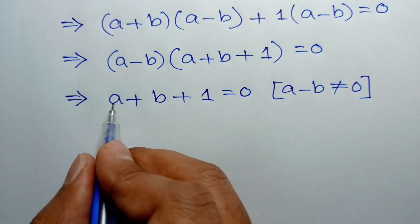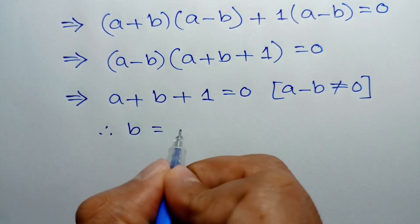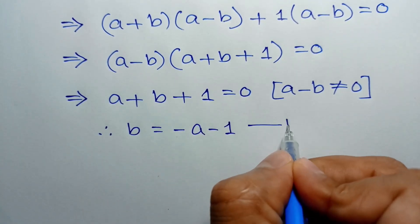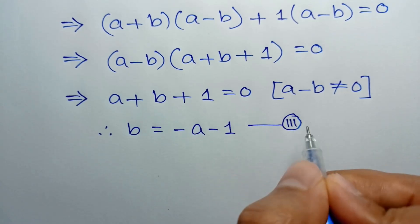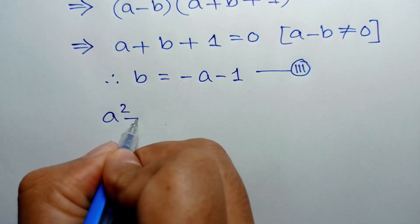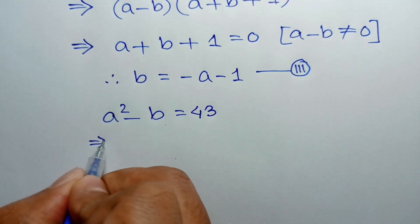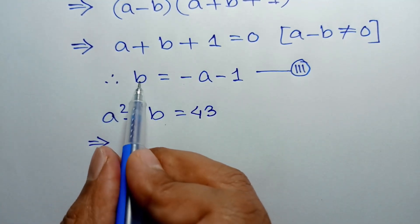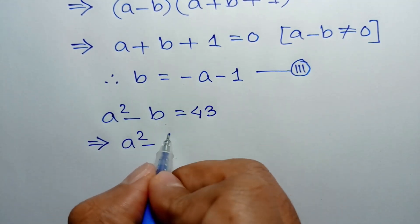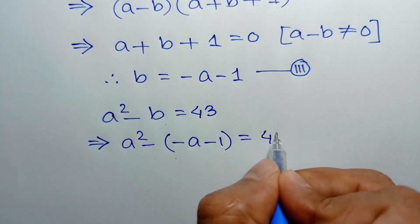Taking A and 1 to the right side, we get B equals negative A minus 1. Call this equation number 3. Now, from equation 1, A squared minus B equals 43. Substituting the value of B, we write A squared minus the quantity negative A minus 1 equals 43.